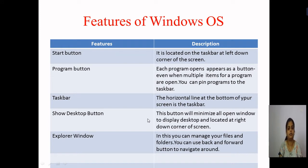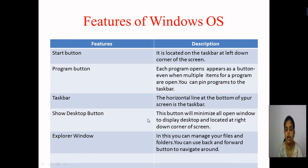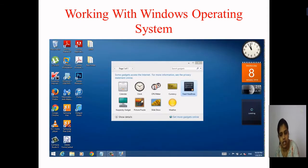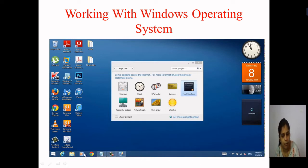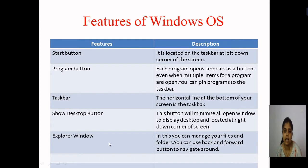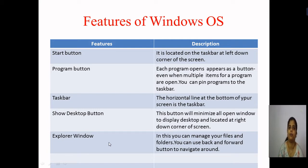The third feature is the taskbar. The taskbar is the horizontal line at the bottom of your screen. In it, a number of different applications or currently executing programs can be kept — they are minimized and kept on this taskbar. This taskbar is always at the bottom of your computer or laptop screen.